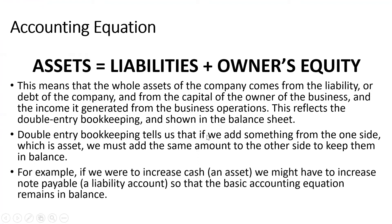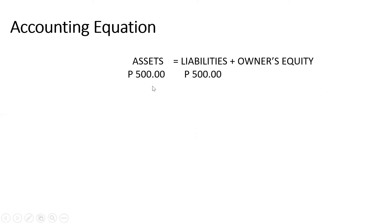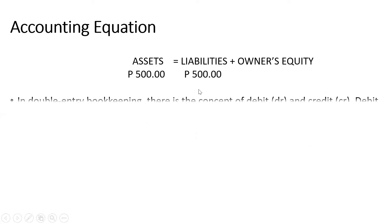The double-entry bookkeeping tells us that if we add something from the asset side, we must also add something to the other side to keep it balanced. For example, if we increase cash, which is an asset, we might have to increase notes payable, which is a liability, so the basic accounting equation remains in balance. For example: 500 for assets, 500 for liabilities.